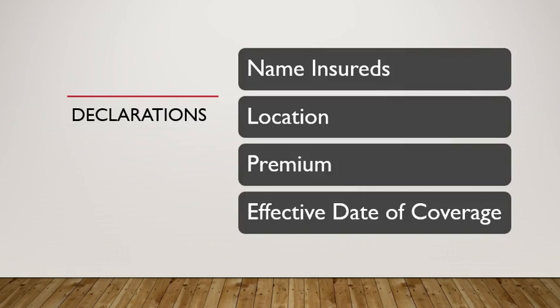The first page that you'll find in a policy should be the declarations page. You'll get a question on the test that pertains to the first part of a policy and you need to know that it is the declarations page. On the declarations page you're going to see the name of the insured, the location of the property being insured. If it's a home you're going to see the property's home address; if it's a vehicle it's going to be the garaging address or where the vehicle is primarily located, and in most cases it's going to be the home address.